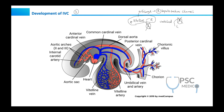As you can see, this is the right vitelline vein which remains and enlarges. As we all know, the yolk sac is the area where development of major abdominal organs occurs. The biggest organ in the abdomen by size is the liver. So this enlargement of the right vitelline vein causes the right hepatocardiac channel, and this right hepatocardiac channel forms the hepatocardiac portion of IVC.